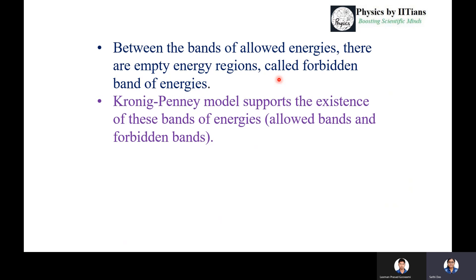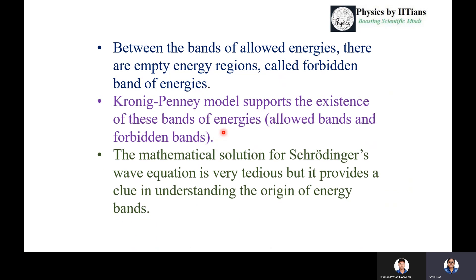The Kronig-Penney model gives us the concept of allowed energy levels and forbidden energy levels. It supports the existence of bands of energies — allowed bands and forbidden bands — due to the introduction of periodic potential inside the crystalline solid. The Schrödinger wave equation also gives a clear clue in understanding the origin of energy bands; the Bloch function becomes periodic with the periodicity of the crystalline solid.